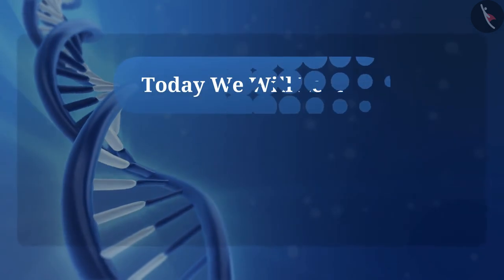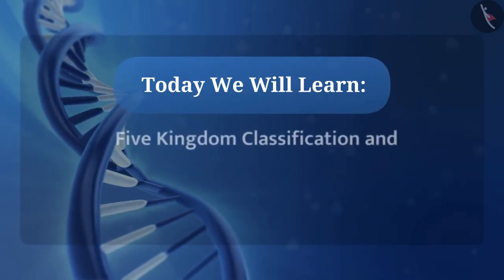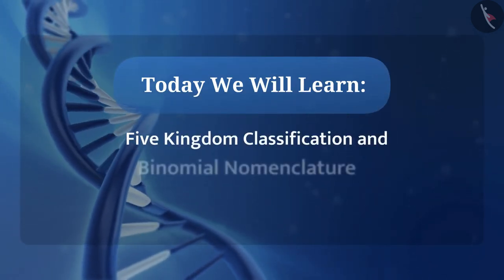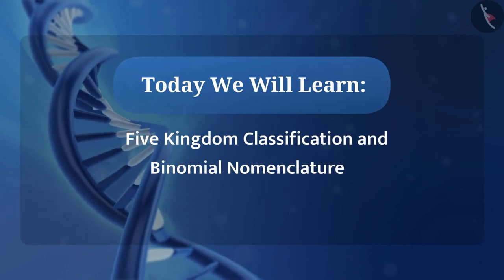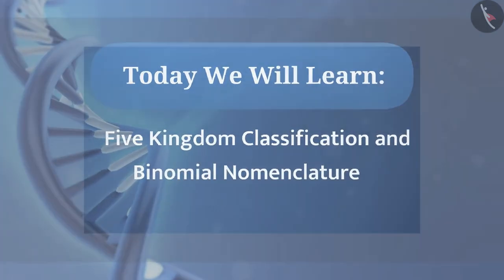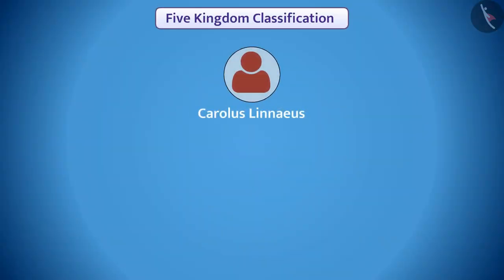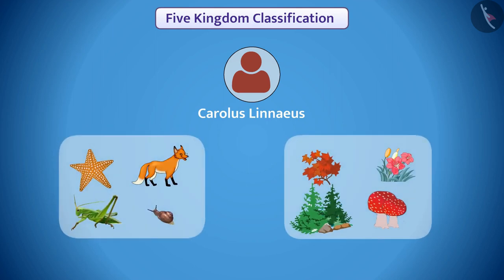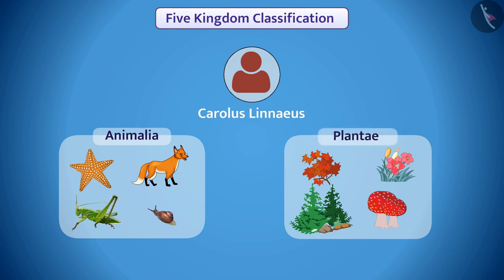Today we will learn five kingdom classification and binomial nomenclature. In the beginning, Carlos Linnaeus divided the organisms into two kingdoms: one was Animalia and the other was Plantae.